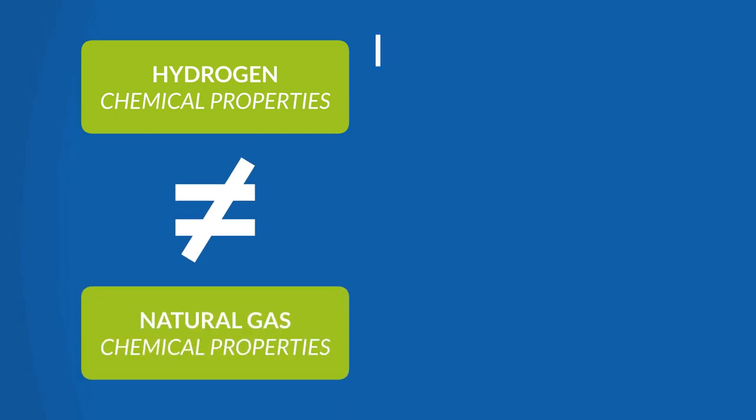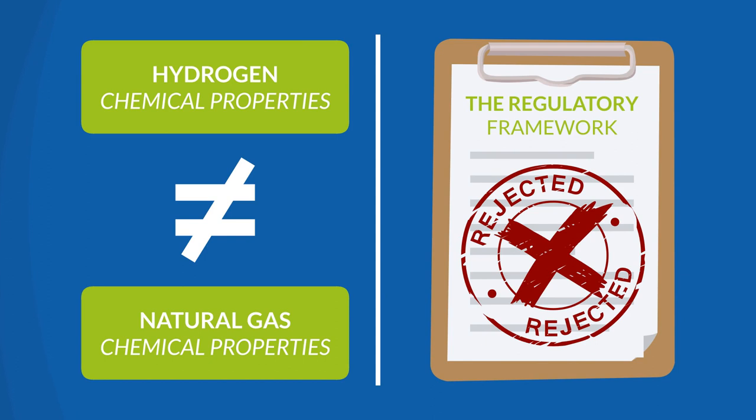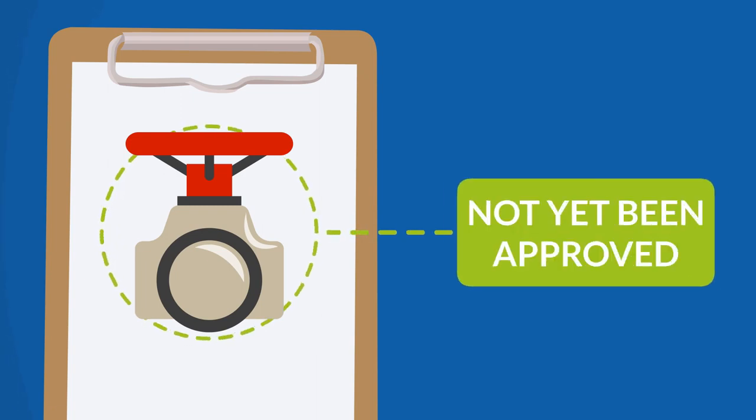To begin with, hydrogen has different chemical properties than natural gas, which means that the regulatory framework for natural gas loses its validity. A second challenge is that the technical instructions for hydrogen that relate to valves have not yet been approved.